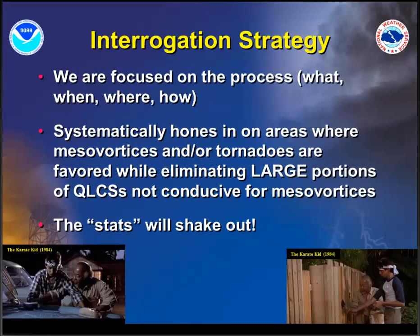When it comes to radar interrogation for QLCSs and mesovortices, we're really focused on the process — the what, the when, the where, the how. If you focus strictly on stats, you're probably not going to do too well. It's the process that matters. We're honing in on the areas that matter: where are mesovortices and tornadoes favored from a scientific and statistical standpoint within a QLCS? Once you're concentrating on those areas, you can eliminate large portions of QLCSs that aren't conducive for mesovortices. The methodology and strategy are what's important here.